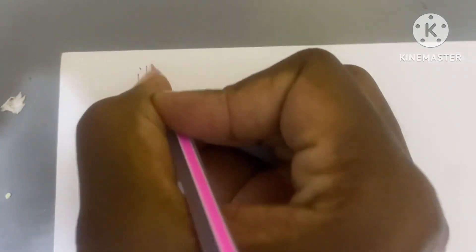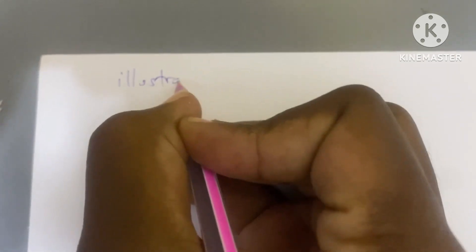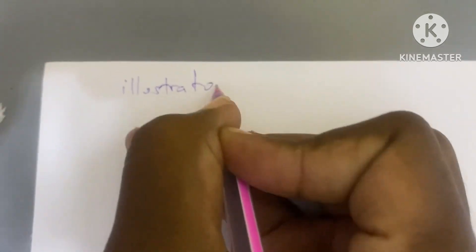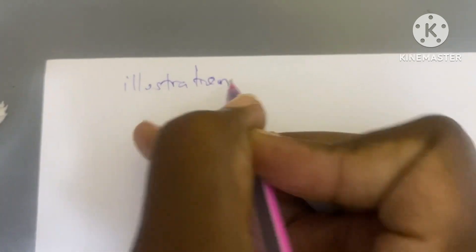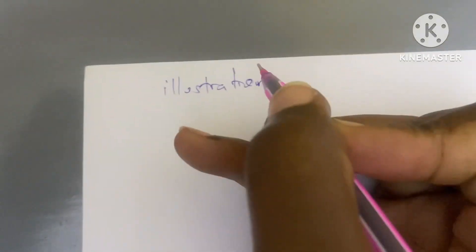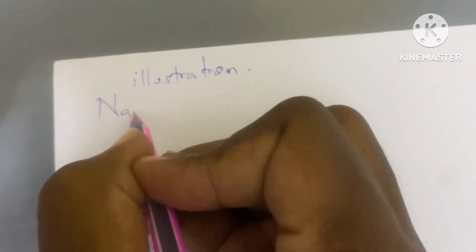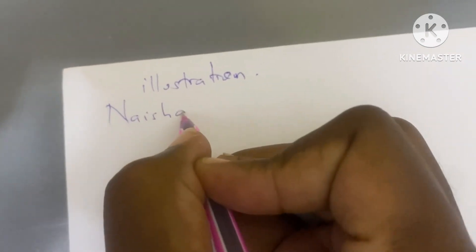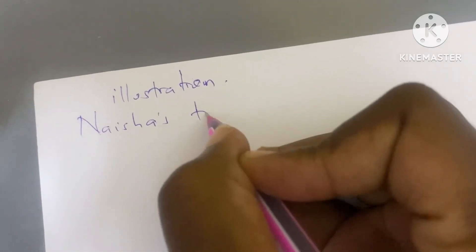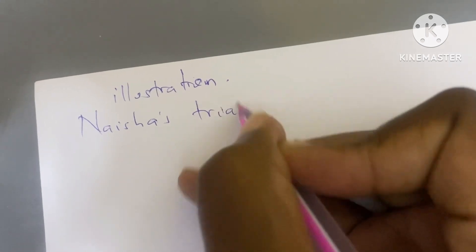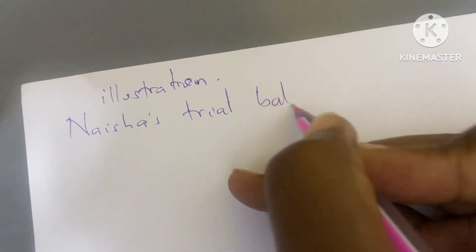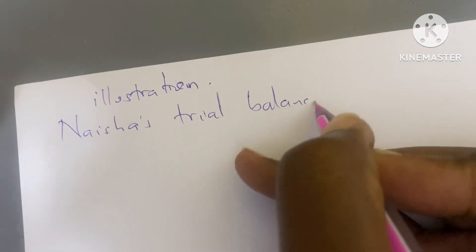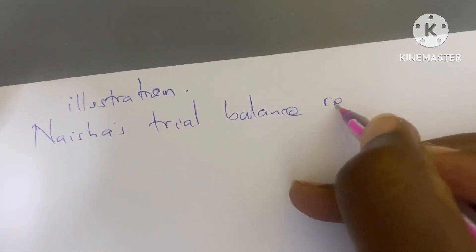In this video we are going to have an illustration of how we come up with a suspense account. Let's say Nation's trial balance revealed...